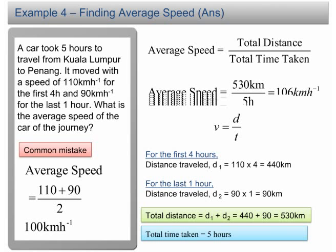From this example, we can conclude that we shouldn't calculate the average speed by finding the mean of the two speeds. Instead, find the average speed by using the equation: average speed equals total distance over total time.